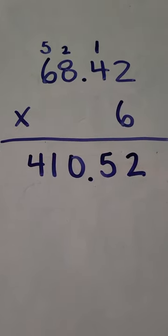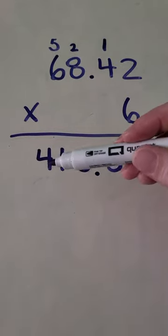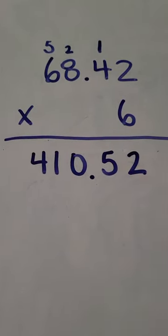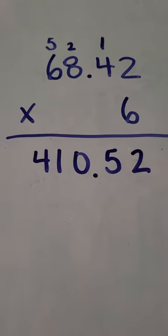So the answer for sixty-eight and forty-two hundredths times six is four hundred ten and fifty-two hundredths. Thanks, stay tuned for some more practice with decimals.